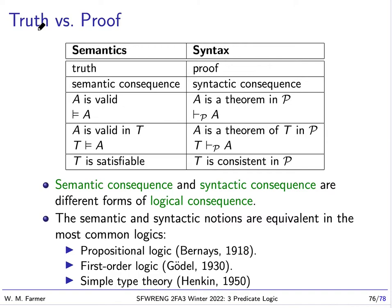So truth notions deal with the semantics of FOL, and proof notions deal with what we can prove in a proof system for FOL. So we have this nice correspondence between these semantic elements and these syntactic elements.